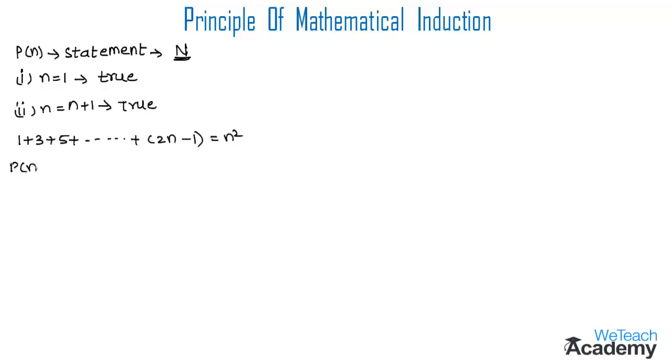Consider the given statement as P(n): 1 + 3 + 5 + ... + (2n - 1) = n².